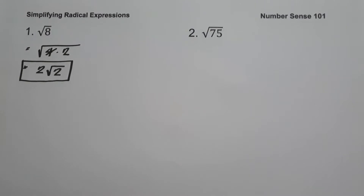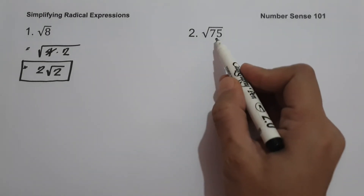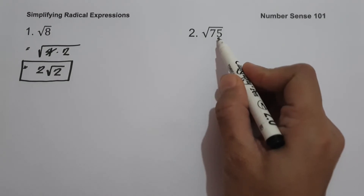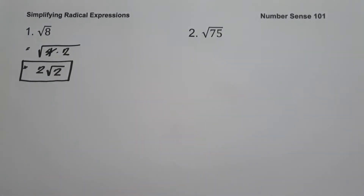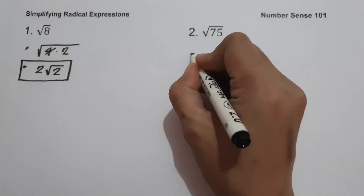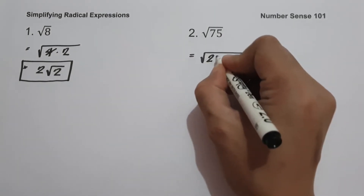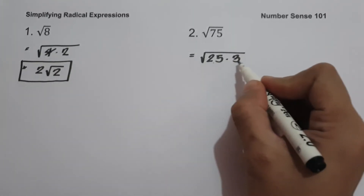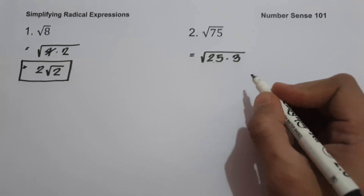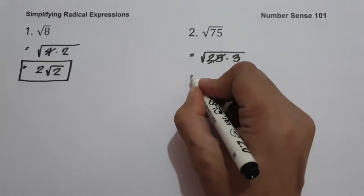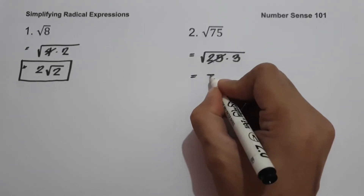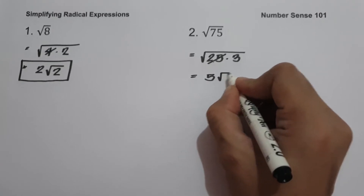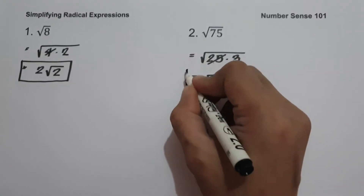On example number 2, we have square root of 75. Since 75 is not a perfect square, we are going to find two factors where one of the factors is a perfect square. The factors of 75 are 25 and 3. 25 multiplied by 3 is 75, and the square root of 25 is 5. Therefore we are going to have 5 square root of 3, and this will be our answer.